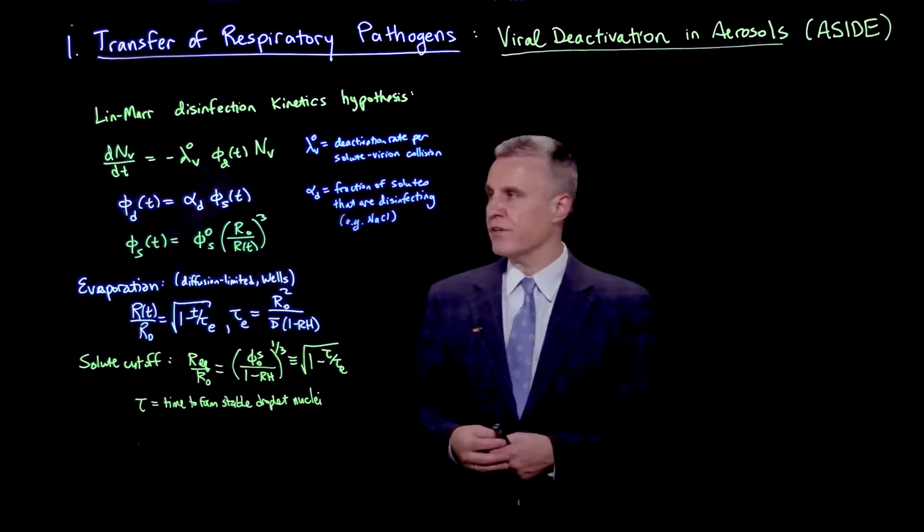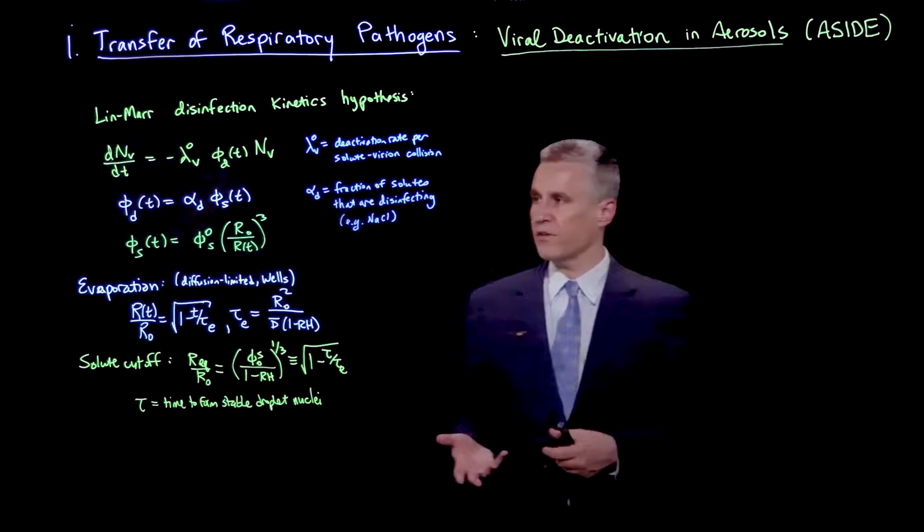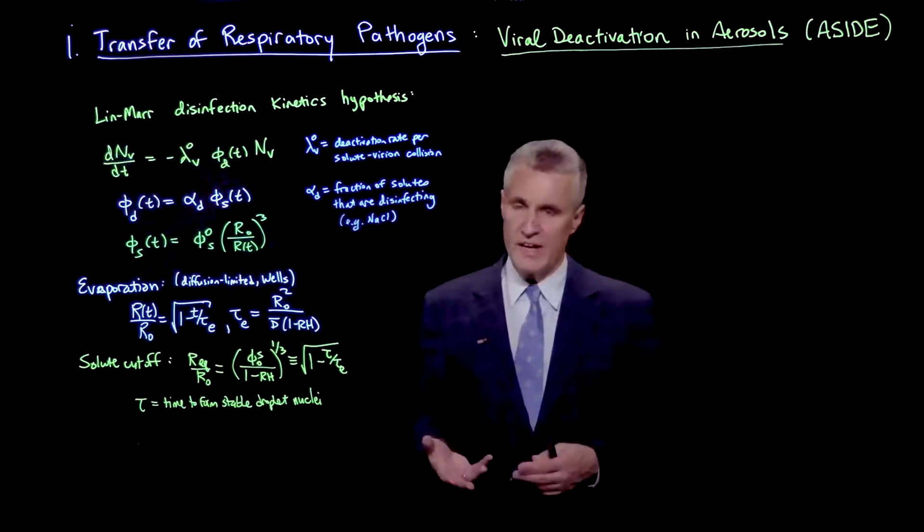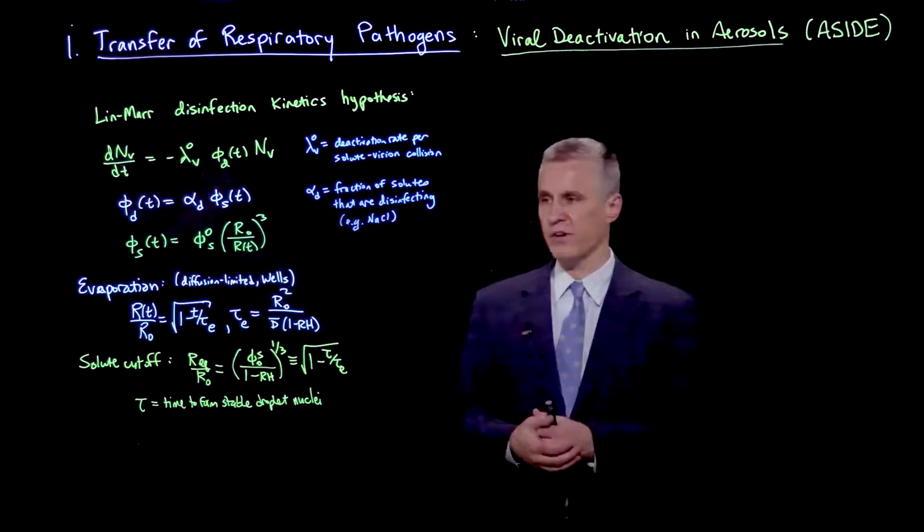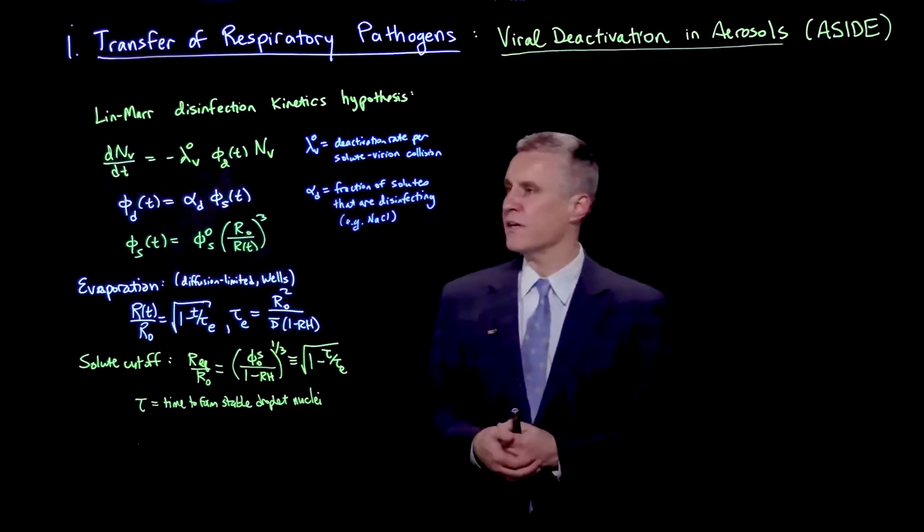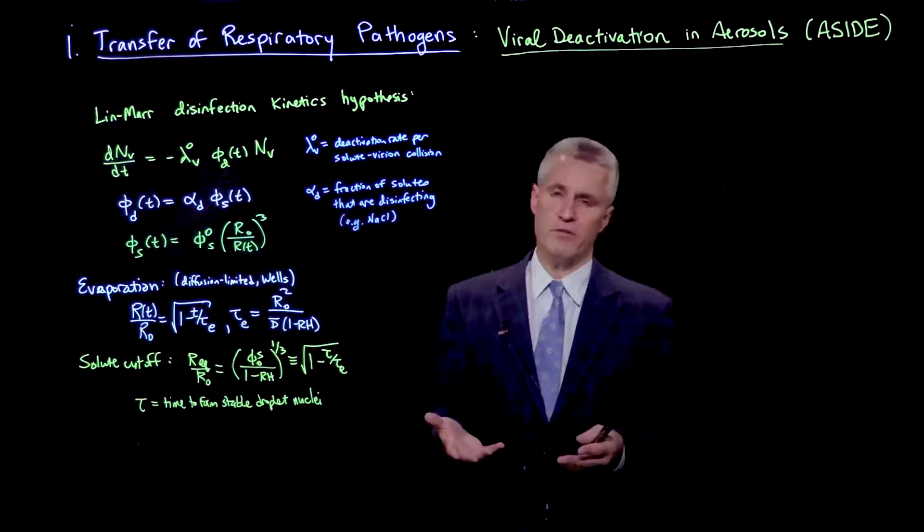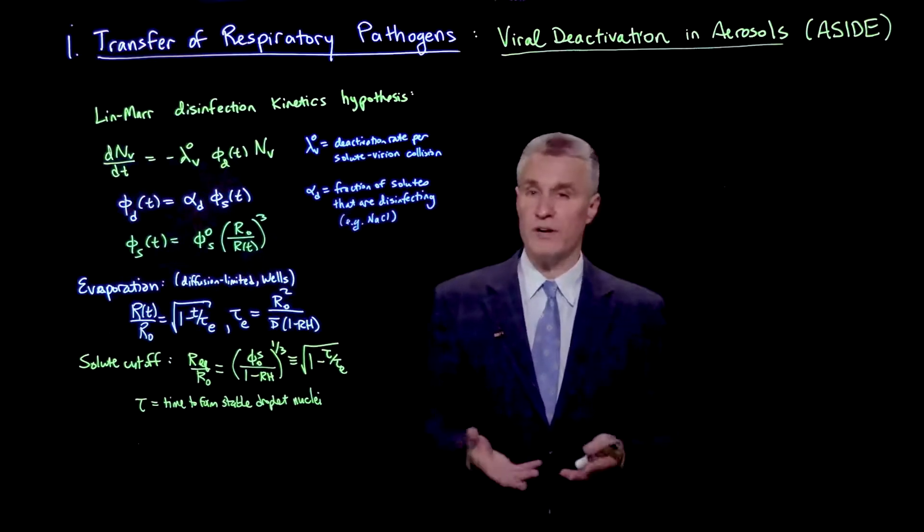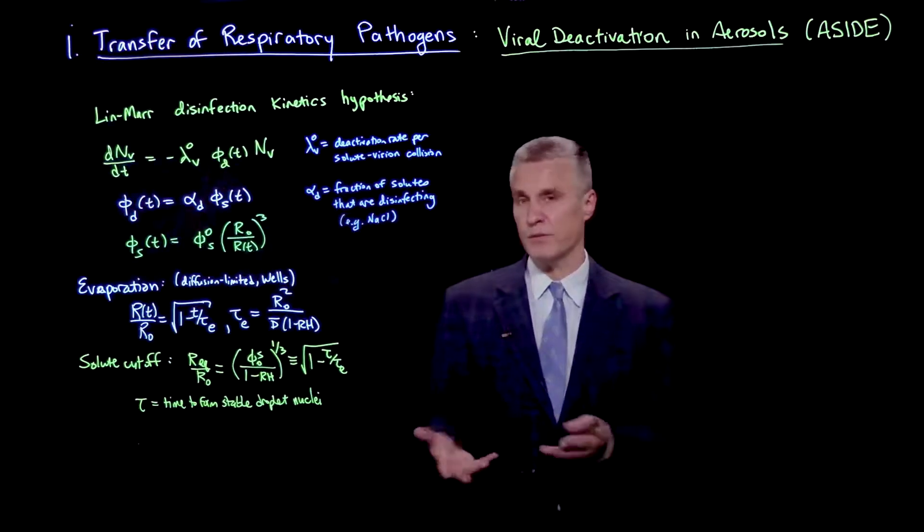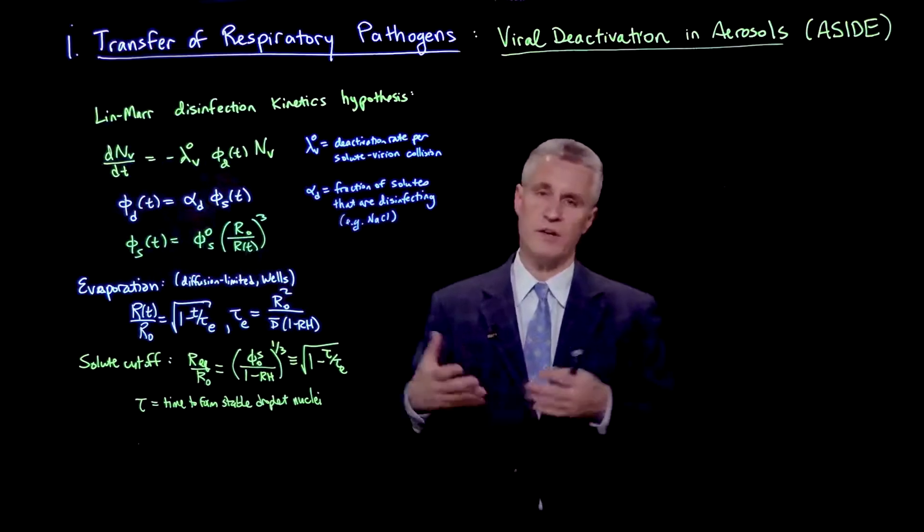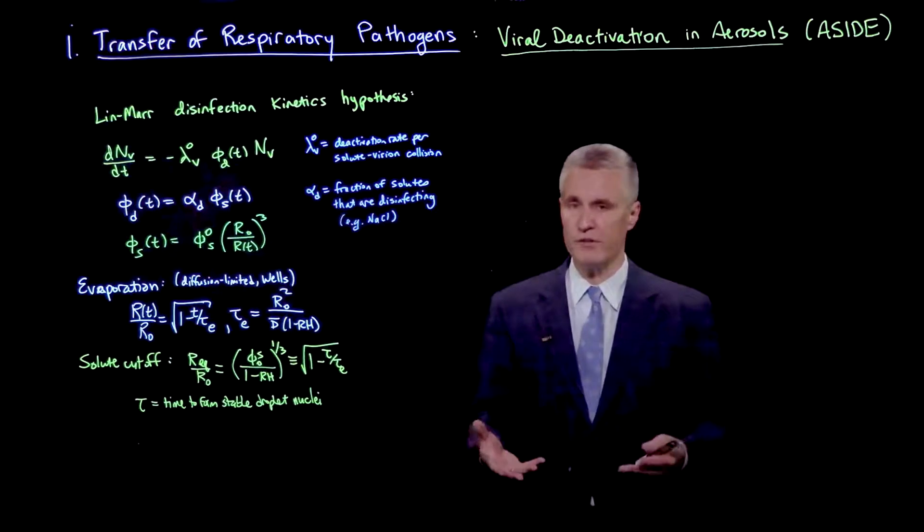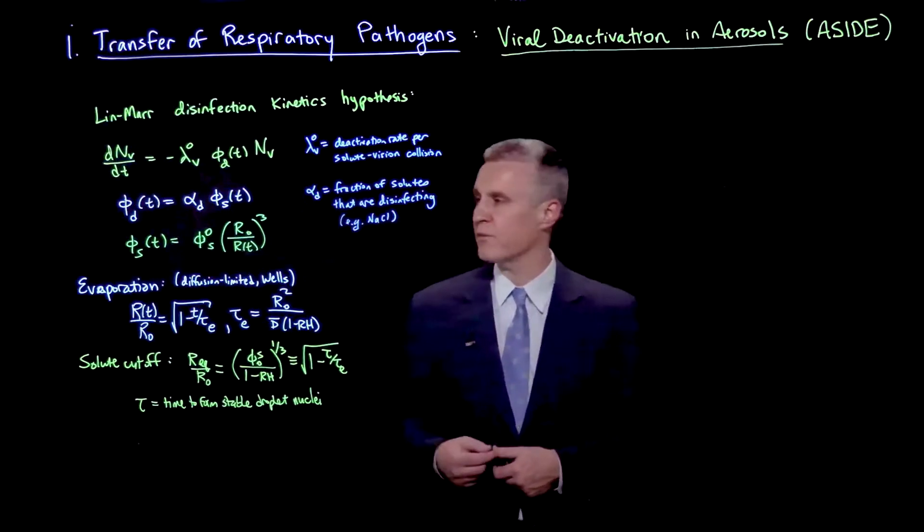The volume fraction of disinfecting solutes we'll write as alpha d, a constant, times phi s, which is the total volume fraction of solutes present. That might be, for example, the fraction of solutes that are sodium chloride or some other salt that might be causing the damage to the virus, as opposed to the mucins or other macromolecules that may be present.